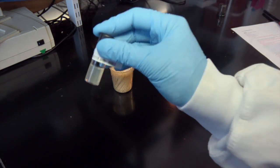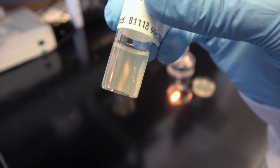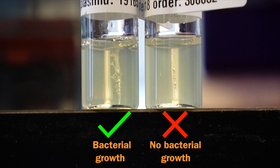Next, we take a look at our stab to make sure that there is visible bacterial growth. If nothing has grown in the stab, it's unlikely that anything will grow on the plate.